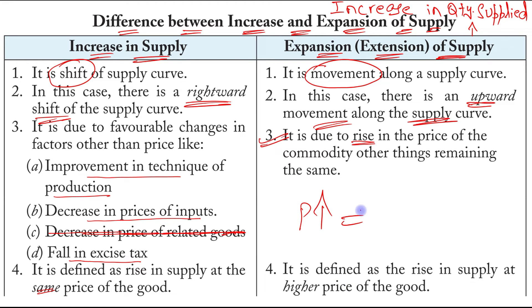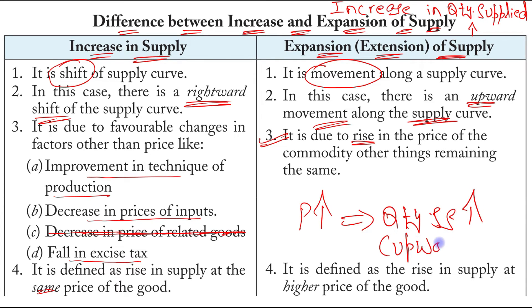Expansion of supply leads to an increase in quantity supplied, and this is the case of upward movement along the supply curve. So expansion of supply is defined as a rise in supply at a higher price of the good.